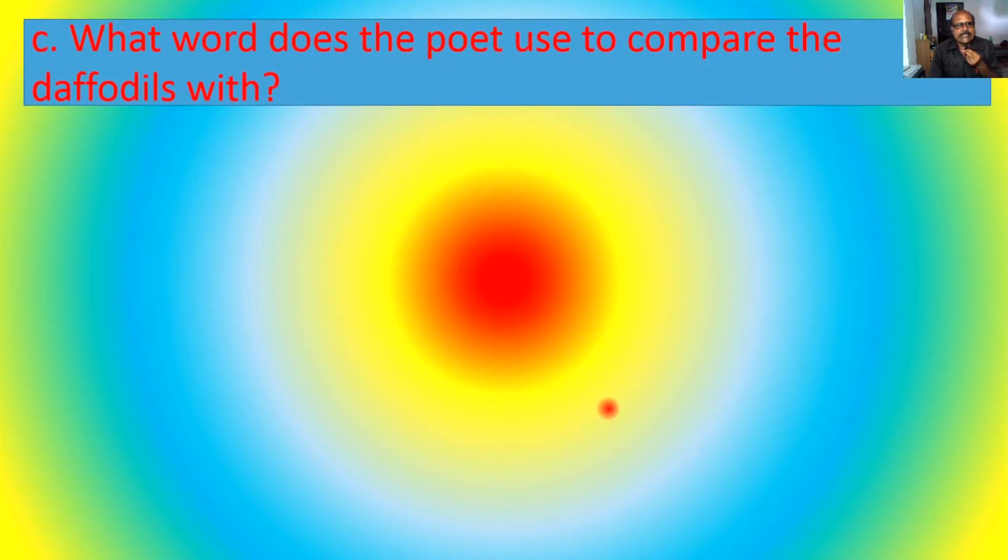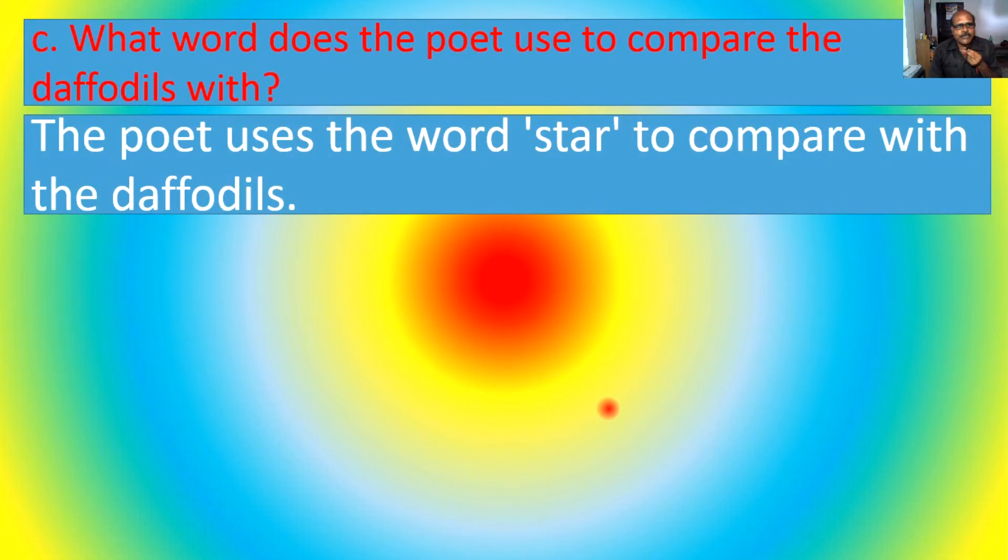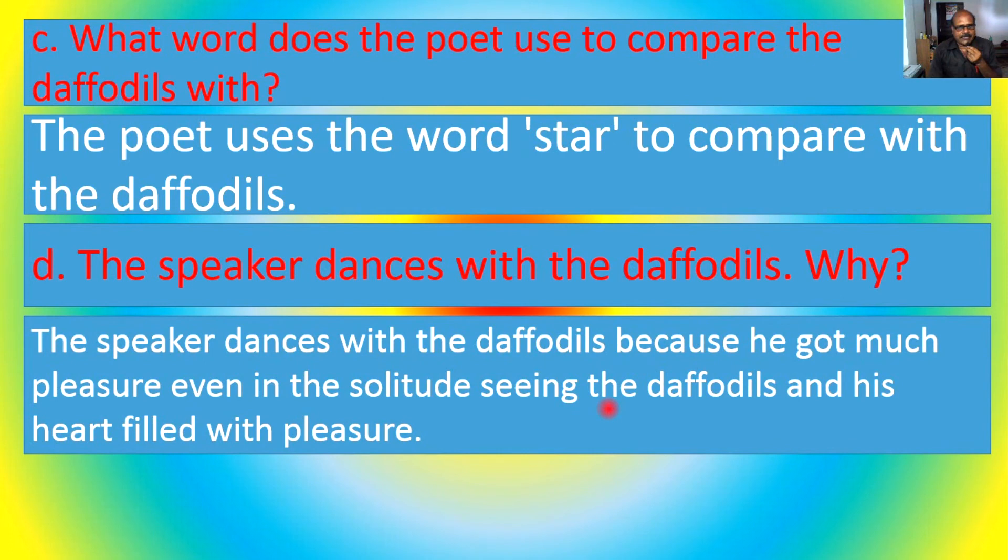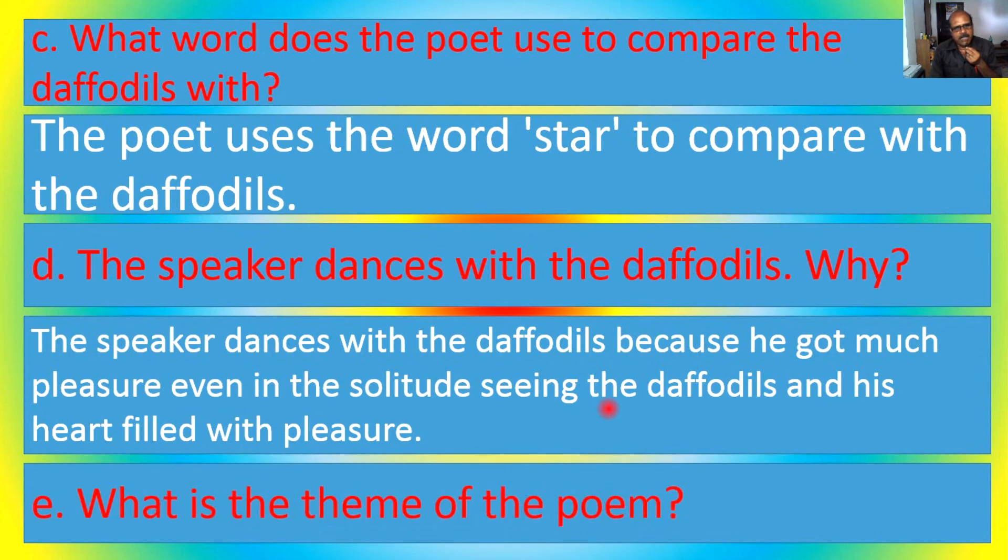What word does the poet use to compare the daffodils with? The poet uses the word star to compare with the daffodils. That's why as stars twinkling in the sky. The speaker dances with the daffodils because he got much pleasure even in the solitude, seeing the daffodils and his heart filled with pleasure.